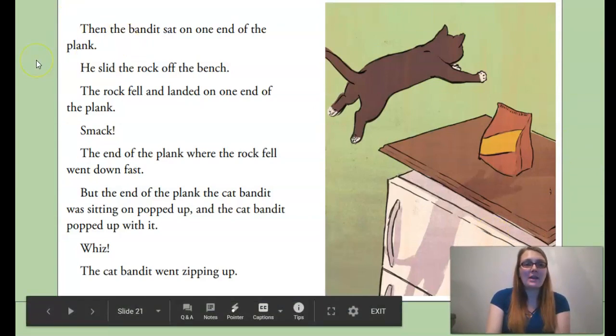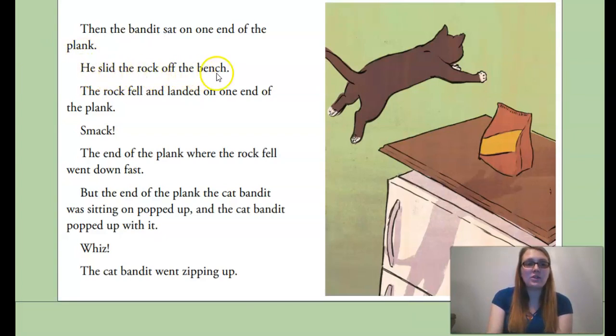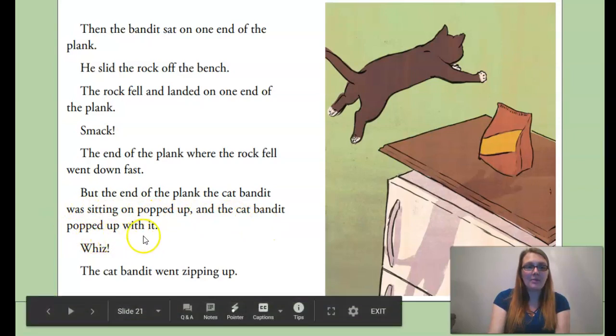Okay. Then the Cat Bandit sat on one end of the plank. He slid the rock off the bench. The rock fell and landed on one end of the plank. Smack! So here's the plank. The cat was sitting on one end. He got the rock to fall. And whoosh! The other end flew and he was able to fly through the sky. Smack! The end of the plank where the rock fell went down fast. But the end of the plank the Cat Bandit was sitting on popped up, and the Cat Bandit popped up with it.